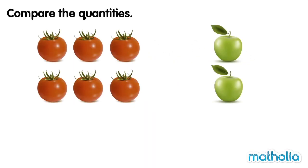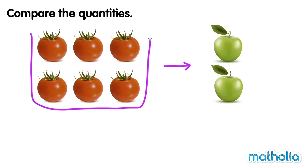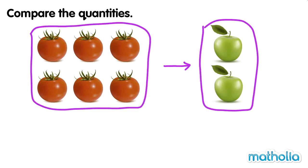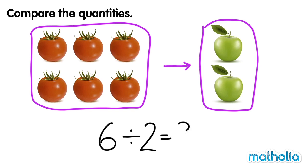Compare the quantities. Let's compare the number of tomatoes to the number of apples. There are six tomatoes and there are two apples. Six divide two equals three. We can say there are three times as many tomatoes as there are apples.